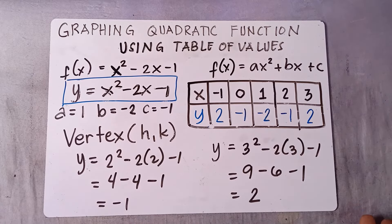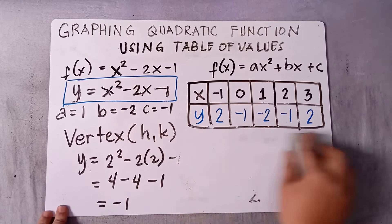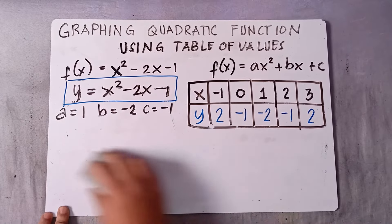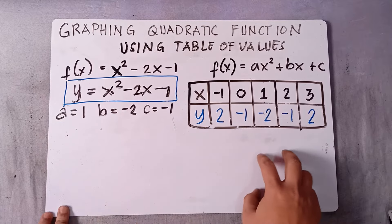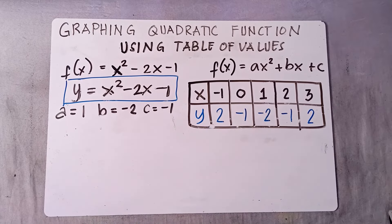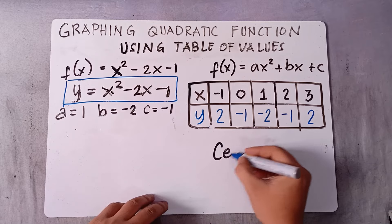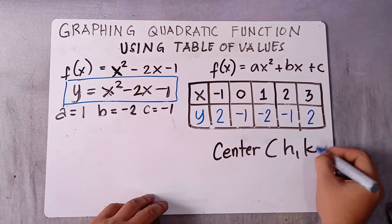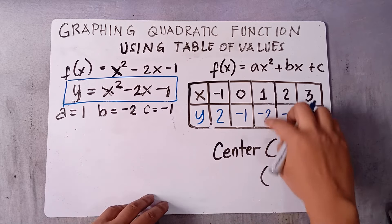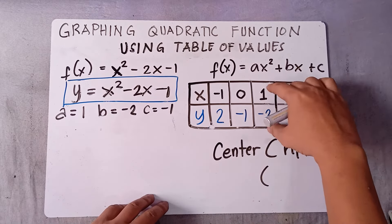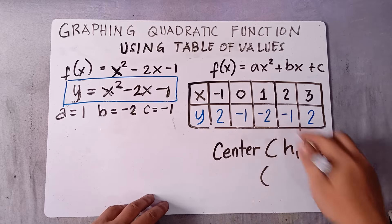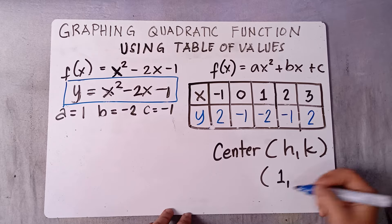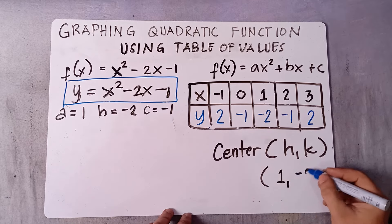Now we have all the x-values and y-values, so we can graph the table. Our vertex (h, k) is (1, -2), which is the center — the middle part of the column.